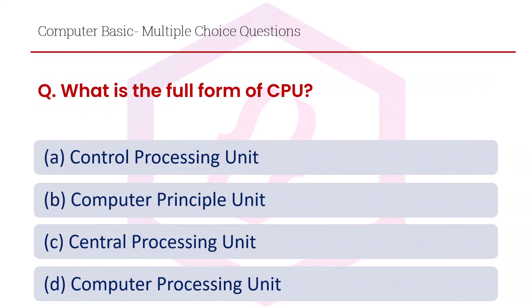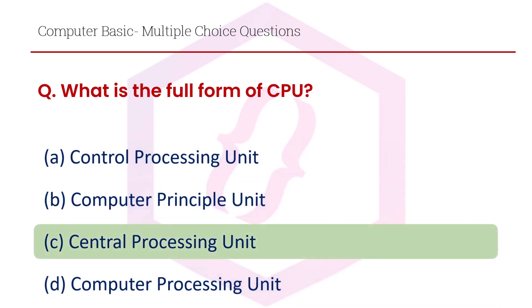The next question is: what is the full form of CPU? Option A control processing unit, option B computer principal unit, option C central processing unit, option D computer processing unit. The right answer is option C, central processing unit.